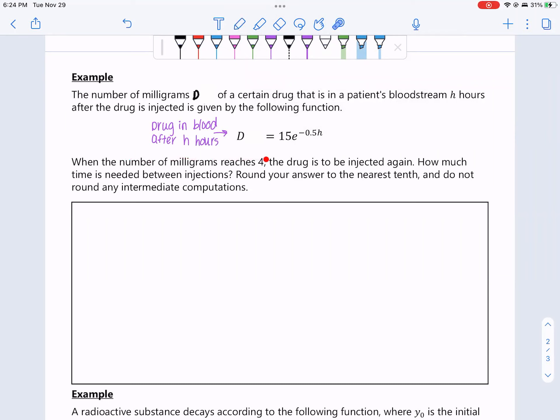When the number of milligrams reaches 4, the drug is to be injected again. How much time is needed between injections? So when the drug reaches 4, when the number of milligrams reaches 4, so this number, when this number reaches 4, they need to re-inject. So we want to know how much time does that take? How much time does it take for this number to become 4? And that's what we're doing. We're putting 4 in for D.